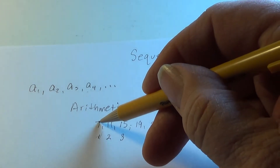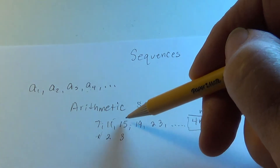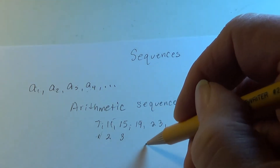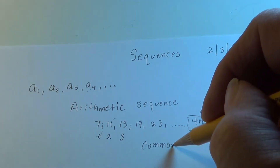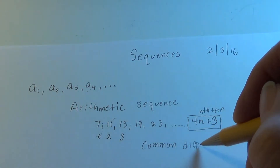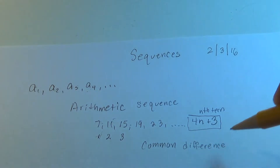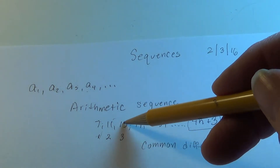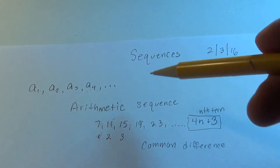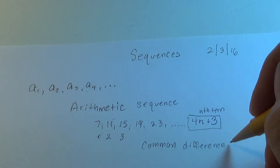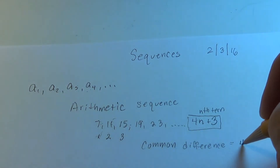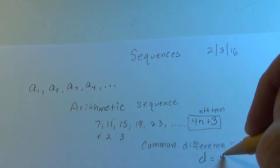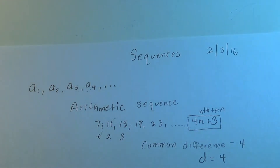When we have an arithmetic sequence, you add a number to each term to get the next term. That special number is called the common difference. If you subtract any term from the one after it, you will get the same result — 23 minus 19 is 4, 19 minus 15 is 4. So we call that the common difference, and we indicate it with the letter d.